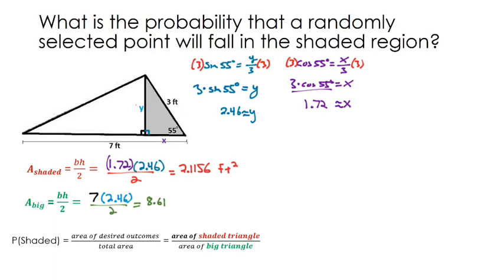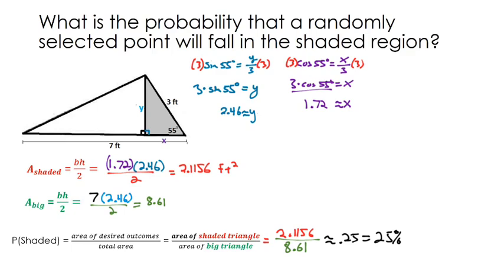Coming to our master formula: the area of a success is 2.1156 and the area of the big triangle is 8.61. Dividing those gives roughly 0.25 or 25%. If you're picking a random point in this figure, there's a 25% chance it's going to be in that shaded region.